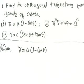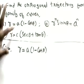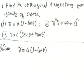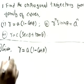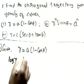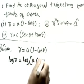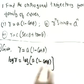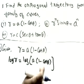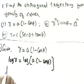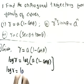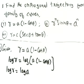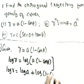On the board we have: find the orthogonal trajectory for the family of curves. There are three questions. Starting with the first one — applying log on both sides gives log r = log[a(1 − cos θ)]. Using log(ab) = log a + log b, this becomes log r = log a + log(1 − cos θ).